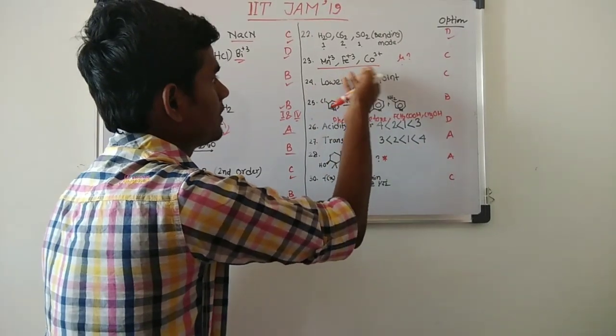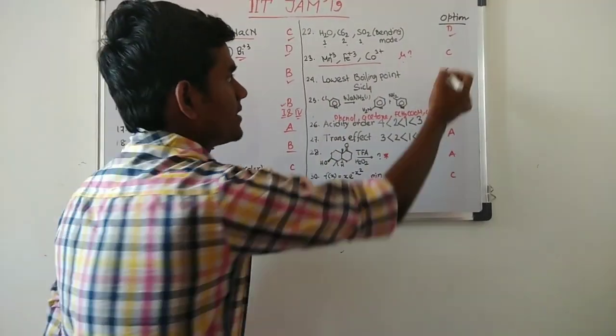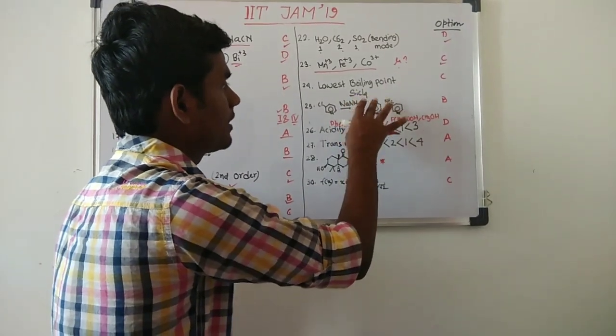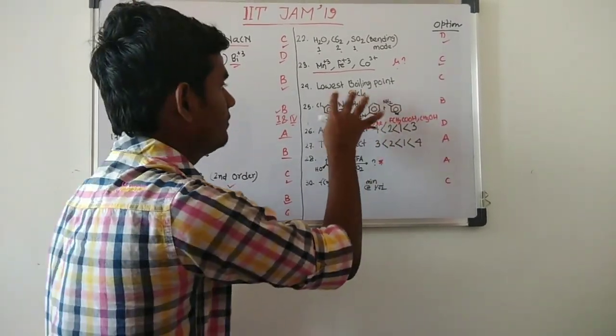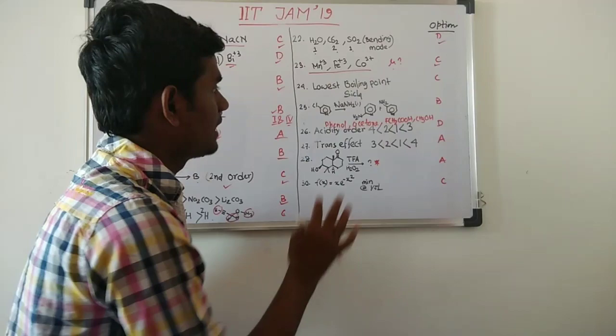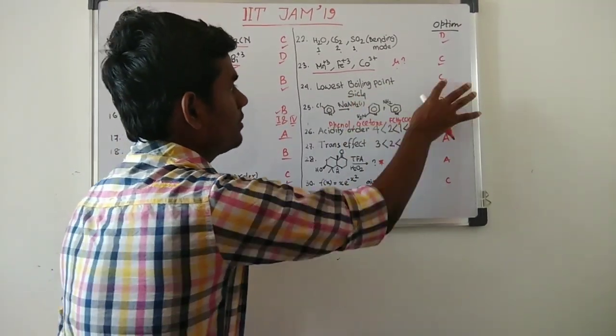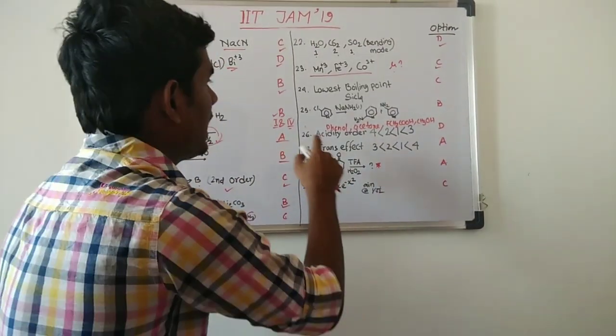They have asked depending upon mu what will be the electronic configuration of this octahedral metal ion complex, and the answer is C. And they have given four options, all are group 4 halides: which will have lowest boiling point? The answer is - it will be tricky, we will come to that later - so right now the answer is SiCl4 and option is C.